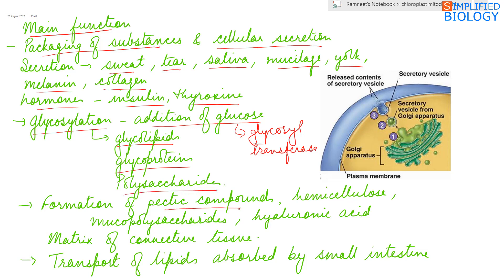Pectic compounds are formed, hemicellulose, mucopolysaccharides, hyaluronic acid, all these are formed inside the Golgi complex. Even the matrix of connective tissue.